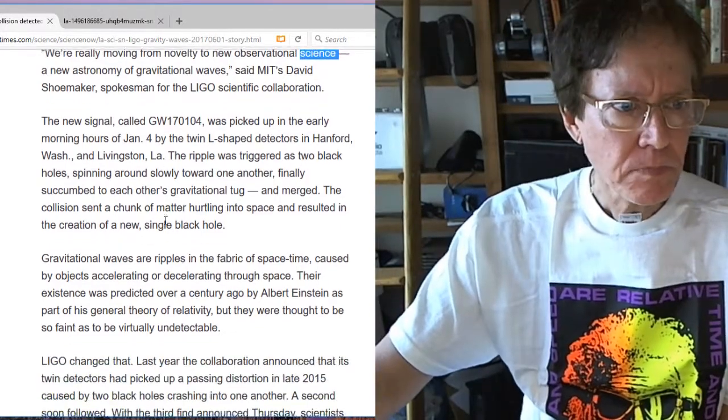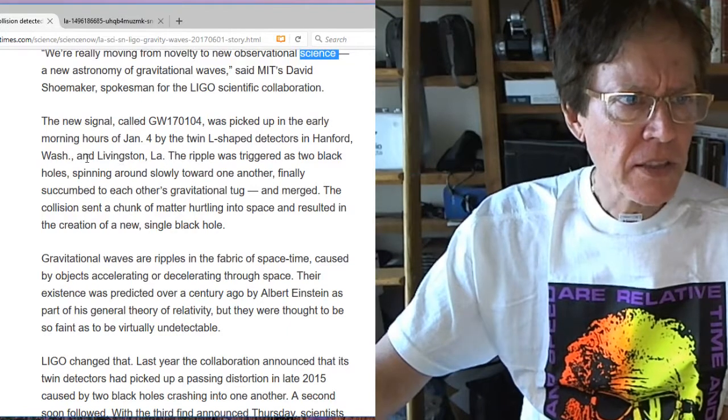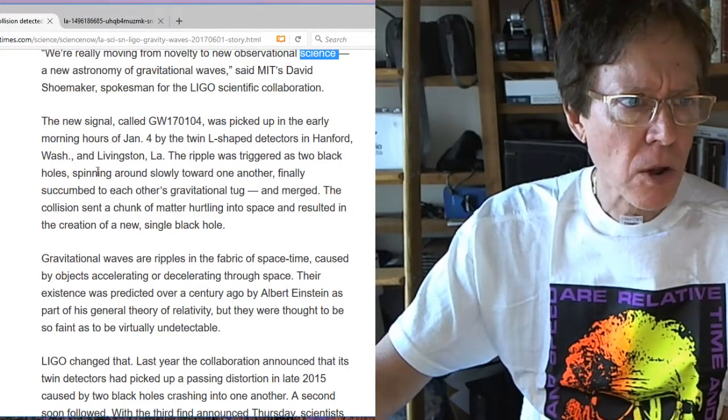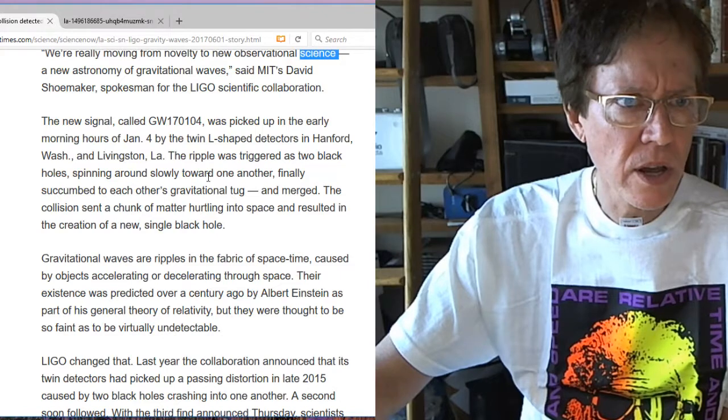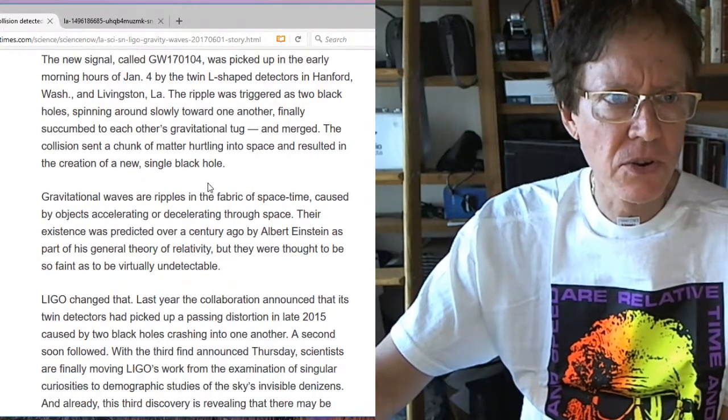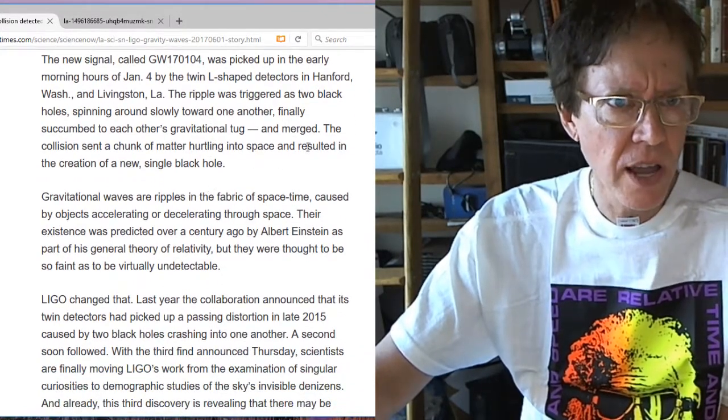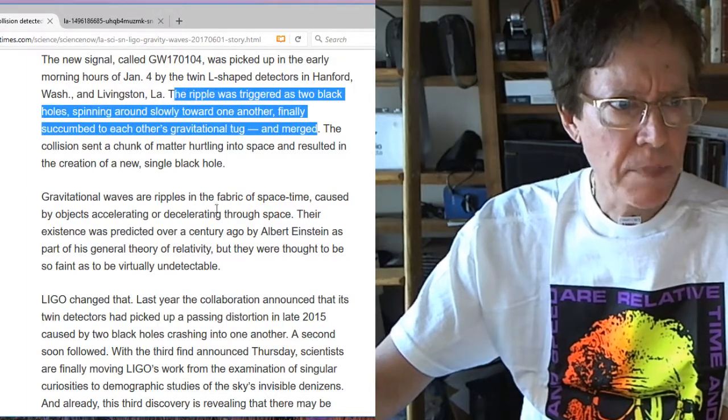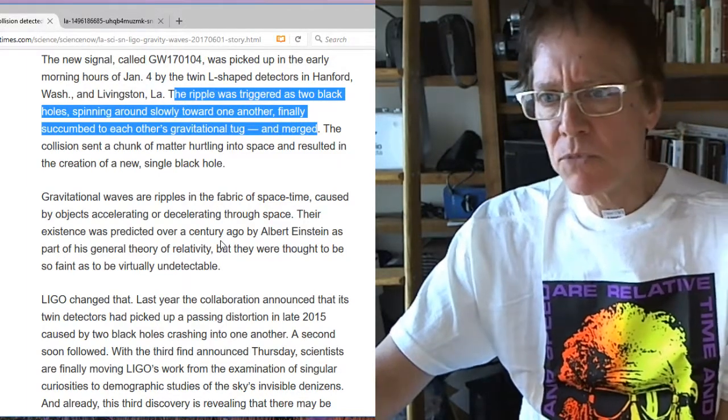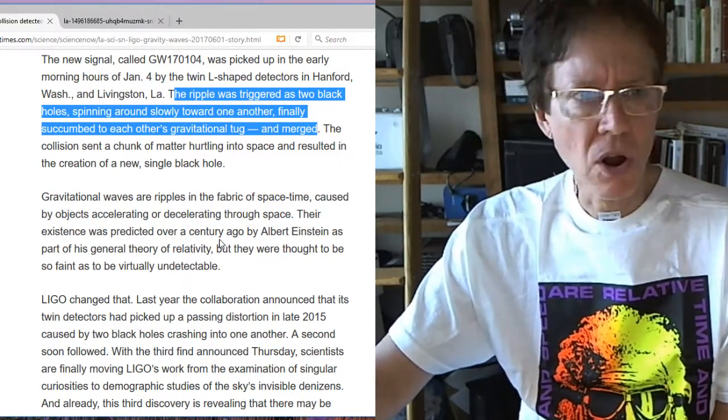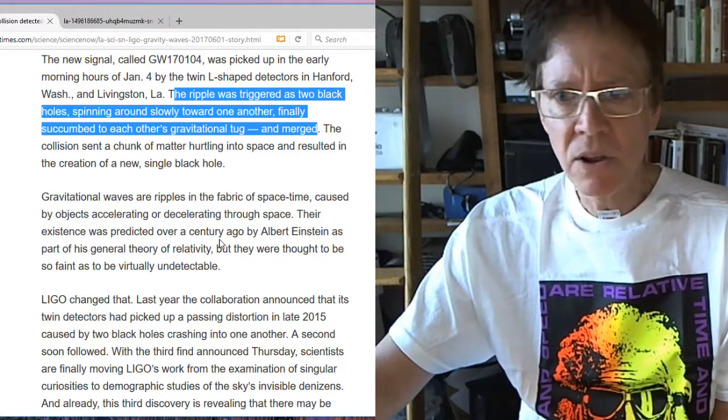So they say the ripple was triggered by two black holes spinning around slowly toward one another, finally succumbing to each other's gravitational tug and merged. That's what's happening here. And here we come to the part where I am going to start tearing this apart a bit.